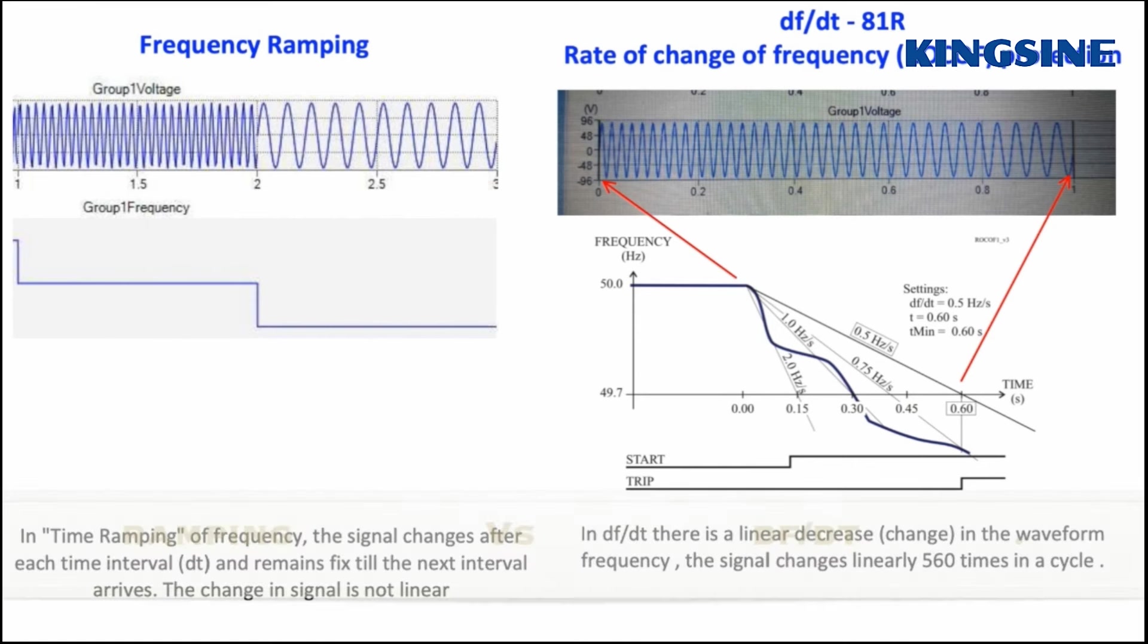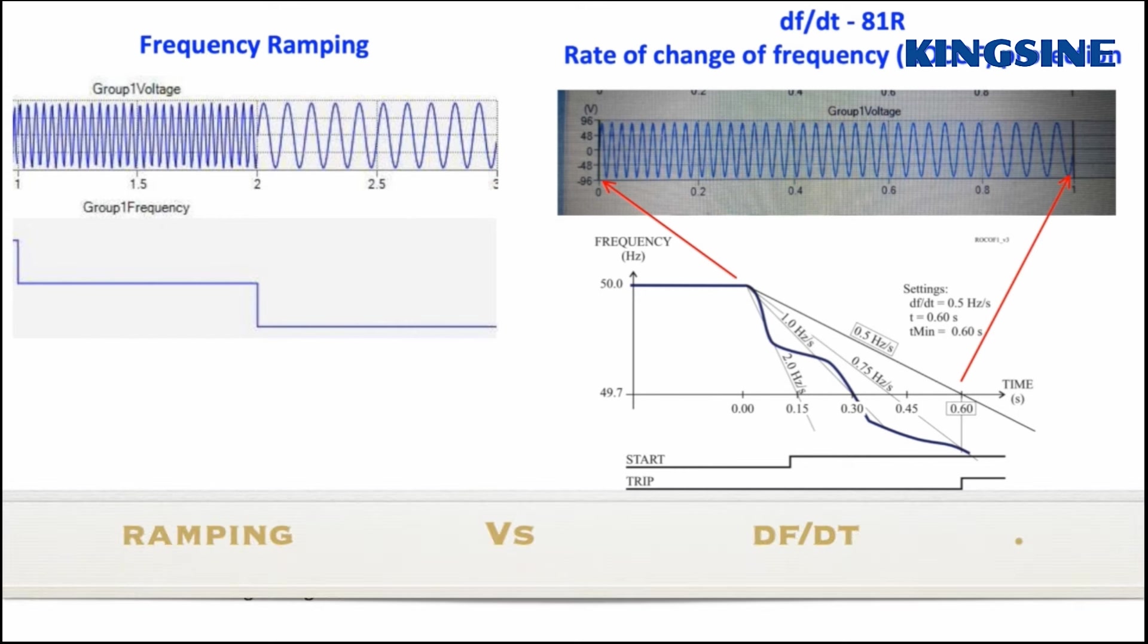Have you ever figured out the difference between the ramping and the DF by DT of signals? Let's try to understand by looking at the waveform in both conditions.